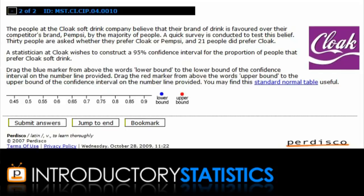In this question, the Cloak Soft Drink Company wants to determine the proportion of people that favor their soft drink over their competitors. They ask 30 people and find that 21 people in this sample prefer Cloak.